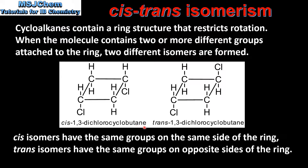On the right we have trans-1,3-dichlorocyclobutane. The cis-isomers have the same groups on the same side of the ring. The trans-isomers have the same groups on opposite sides of the ring.